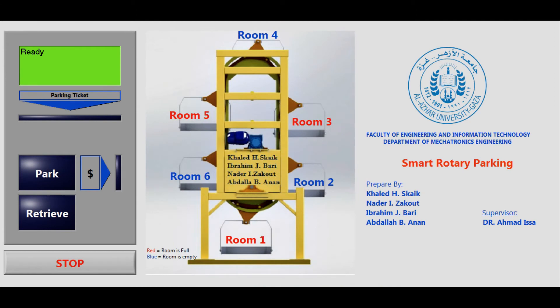The second operating scheme is using a graphical user interface mounted on a personal computer. This GUI was developed using LabVIEW. As you can see, it has a virtual simulation showing the exact position of the platforms and the status of each platform — red for full and blue for empty. By clicking on the park button, the system will search for the closest empty platform and bring it to the entrance position. After that, it will print a PIN code to retrieve your car for security reasons. The system will also calculate the cost for your parking at retrieval, and you need to pay before you can take your car.